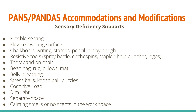Because our PANS and PANDAS kids may have some sensory deficiencies, it's helpful to have sensory techniques and materials within the classroom. We can talk about having flexible seating so they are comfortable, having an elevated writing surface, and considering chalkboard writing, stamps, or pencil in Play-Doh as resistive tools. You can have a TheraBand on the chair — like an exercise band — that goes around the legs at the bottom, and they can put their feet on it, push, pull, and bounce their feet on it quietly. You can have all the great seating options available like bean bags, pillows, and mats. We can teach belly breathing, and have stress balls, koosh balls, and puzzles in the classroom.